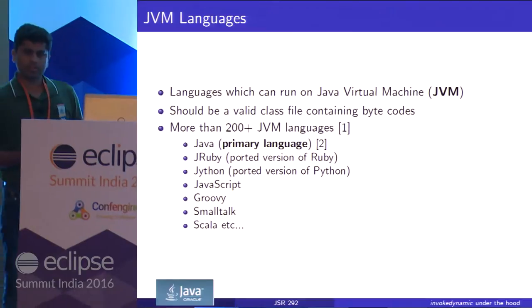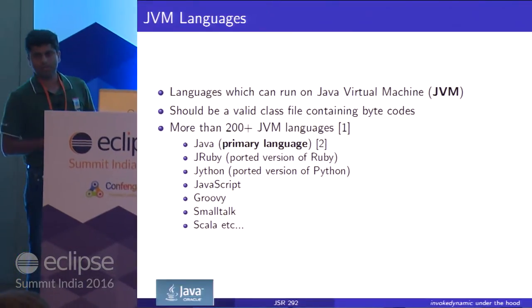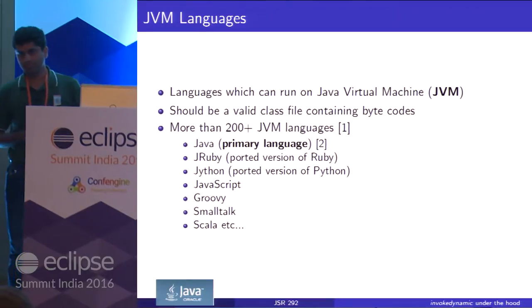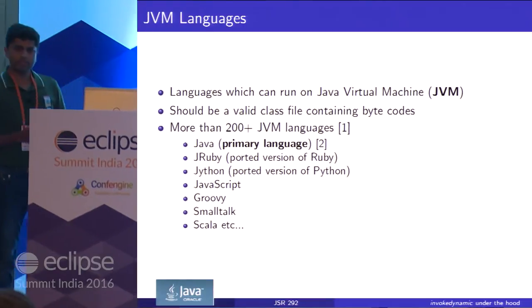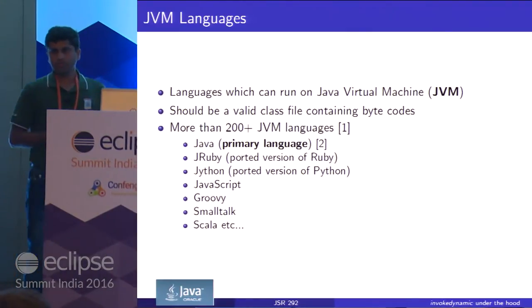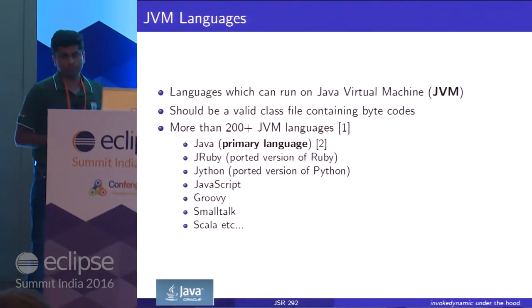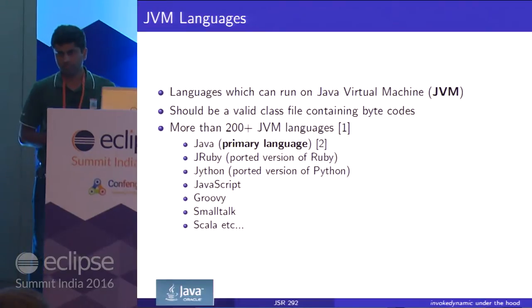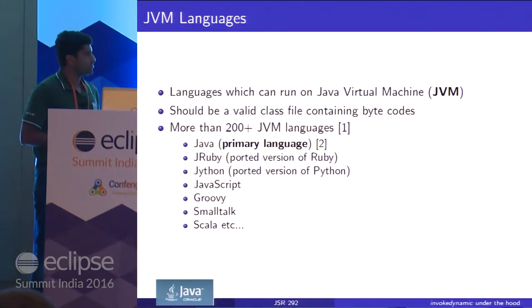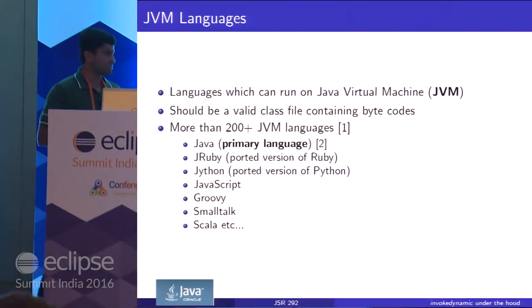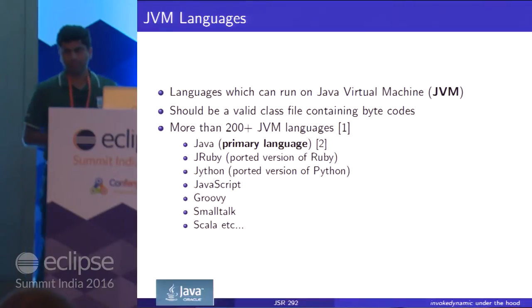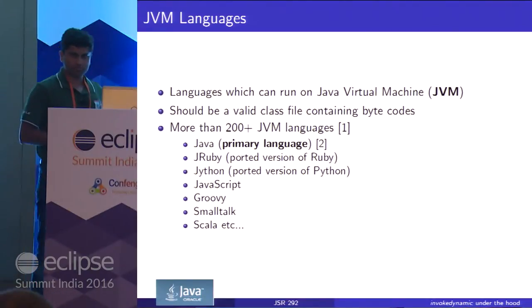JVM languages are languages which you can run on top of the Java Virtual Machine. To run a language on the JVM, you have to produce a valid class file which contains bytecodes. There are 200-plus JVM languages, and Java is the primary language which runs on top of the JVM.